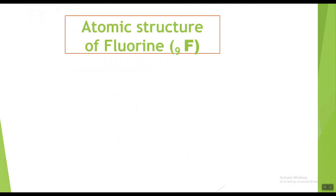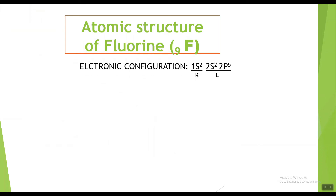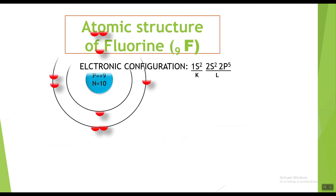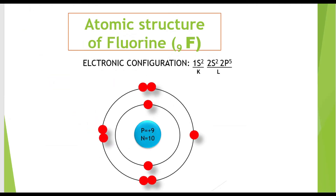Now fluorine. The symbol for fluorine is F with atomic number 9, showing it has nine electrons. The electronic configuration of fluorine is 1s2 2s2 2p5, showing two electrons in the K shell and seven electrons in the L shell. The atomic structure of fluorine shows nine protons and ten neutrons in the nucleus, with nine electrons around the nucleus: two in the K shell and seven in the L shell.